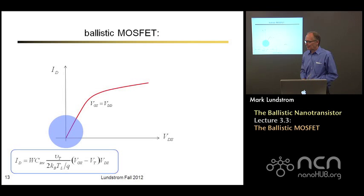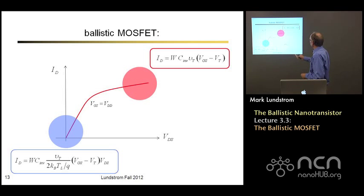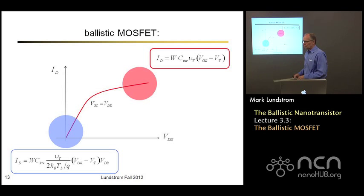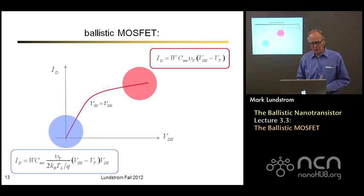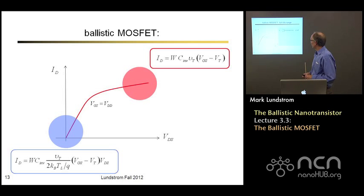Let's recap. We first computed the low bias current using the Taylor series expansion for F1 minus F2. We then computed the high bias current by noting F1 is much greater than F2 and ignoring F2. We did the integrals and got two expressions that look quite different from the traditional textbook MOSFET IV expressions we discussed in week one. We'll describe how they're related later this week.